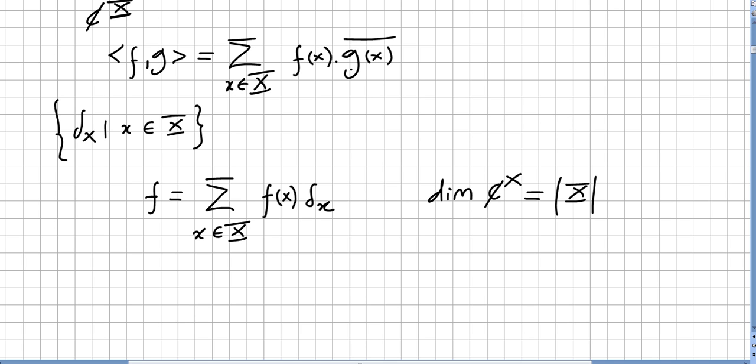So this set {δ_x | x ∈ X} is an orthonormal basis. This set is an orthonormal basis with respect to this inner product.